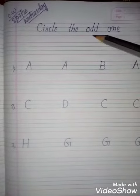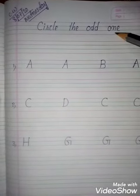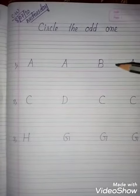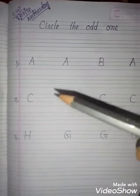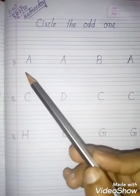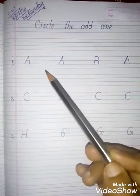You will write 'Circle the odd one.' It means which one is different. That one you will circle. Now, in the first line, you will search which one is different.